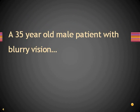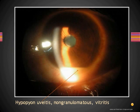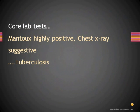This is a 35-year-old male patient who complains of blurry vision. Examination shows a hypopyon uveitis which is non-granulomatous, and on fundus examination there is vitritis. Core lab tests were done — all core lab tests should include tests to rule out syphilis, tuberculosis, and sarcoidosis. In this case, the Mantoux test came back highly positive and the chest X-ray was also suggestive. The diagnosis was tuberculosis.